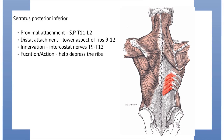The serratus posterior inferior has a proximal attachment at the spinous processes of T11 to L2, and its distal attachment is the lower aspect of ribs 9 to 12. This muscle is innervated by the intercostal nerves of T9 to T12, and its function is to help depress the ribs.